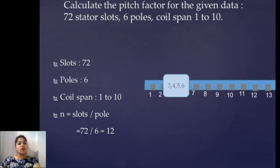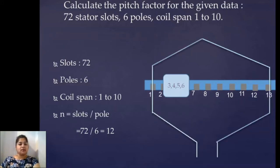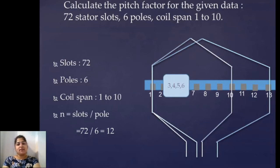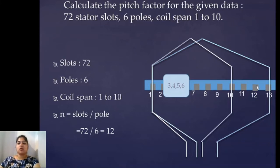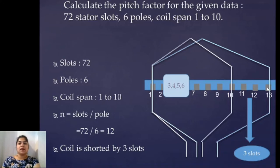Let's draw the figure — the section of the stator in a horizontal manner, giving numbers to the slots. I have shortened slots 3 through 6 into a box to show the figure properly on screen. The full pitch coil starts from slot number 1 and ends at slot number 13 after the 12th slot. The given coil span is 1 to 10, so let's keep our 1 to 10 coil. Both coils start from 1 but end at different slots. Counting the difference: 1, 2, 3 — so the coil is shorted by 3 slots.